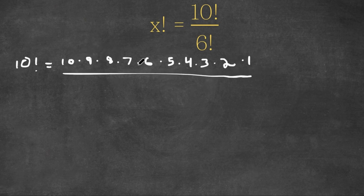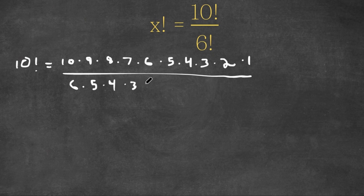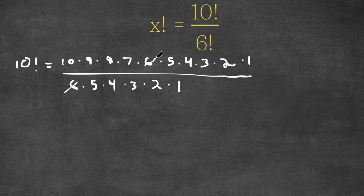We are dividing this by 6 factorial, which is equal to 6 times 5 times 4 times 3 times 2 times 1. If you notice, we have 6 on our numerator as well as on our denominator, so these two can cancel out. Same thing with 5, same thing with 4, and same thing with all the terms below 6.